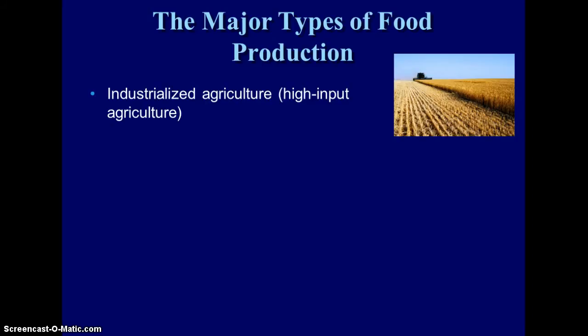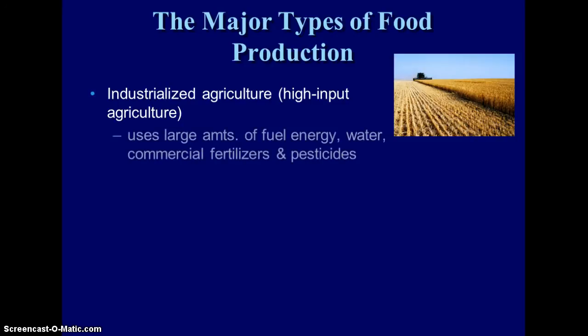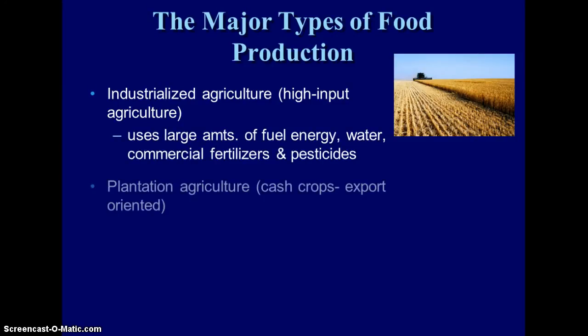To produce our food here in the United States, we depend mainly on industrialized agriculture. It's high input because it requires high input of energy, high input of fertilizer, high input of irrigated water, and pesticides as well.